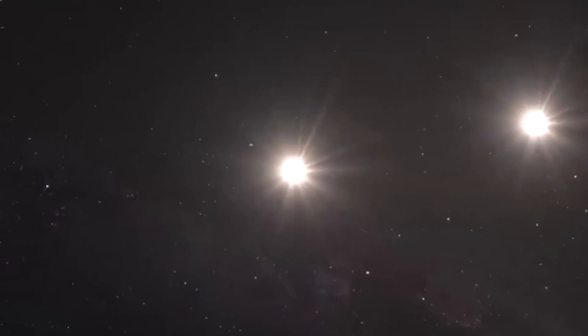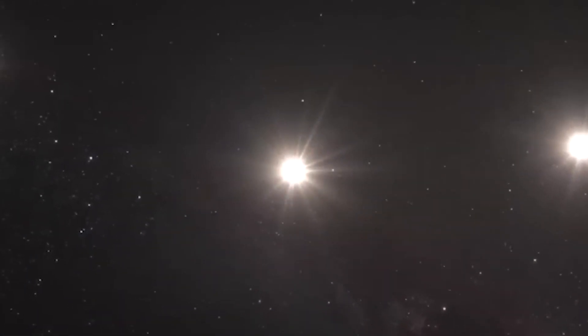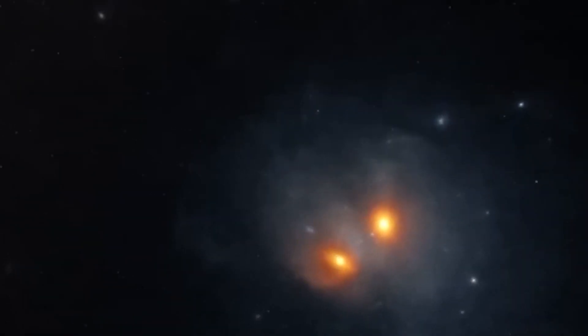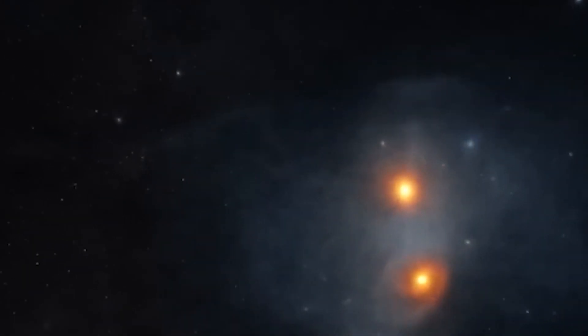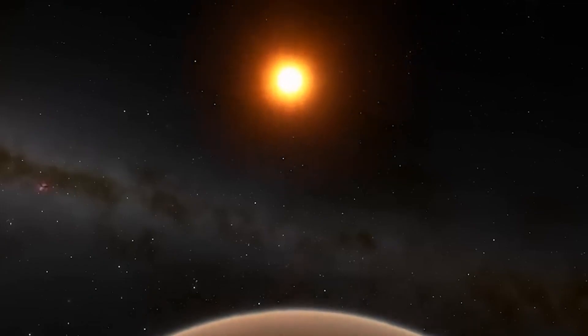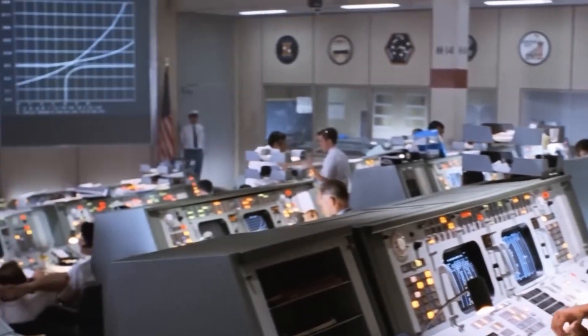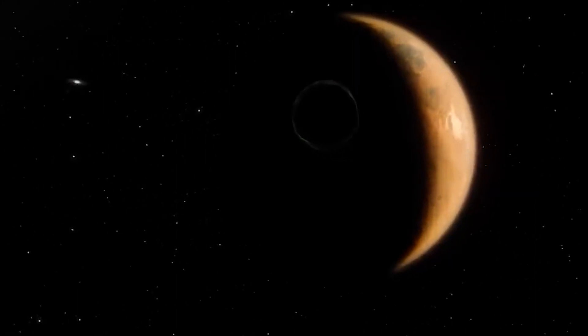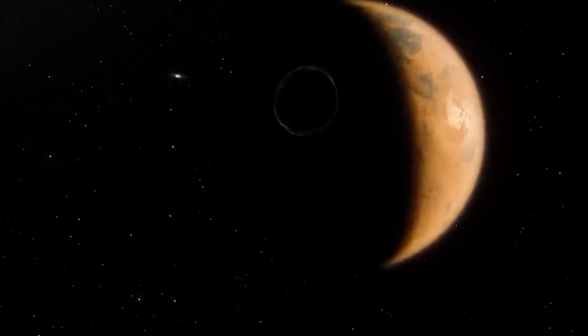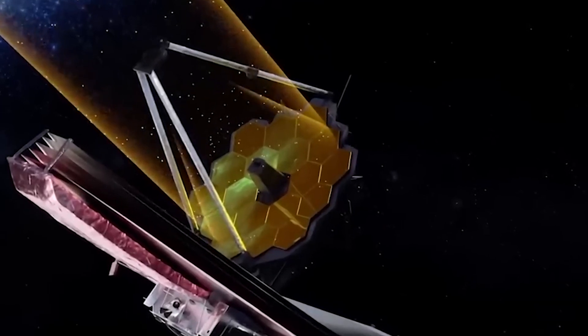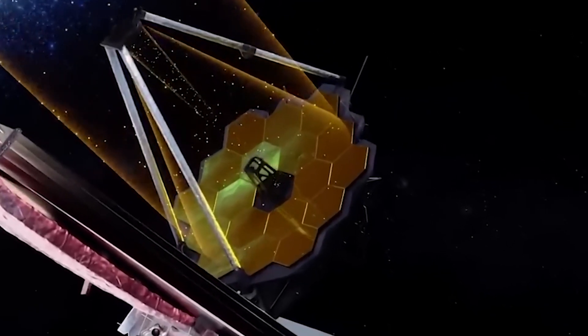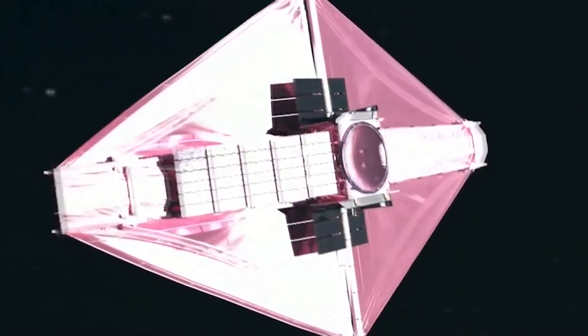Since the first discovery of an exoplanet in 1995, astronomers have identified thousands of worlds beyond our solar system. Some of these exoplanets are similar in size, composition, and distance from their star to Earth, raising the tantalizing prospect of finding life beyond our planet. While no definitive evidence of extraterrestrial life has been found yet, the search for habitable exoplanets and signs of life continues to advance at a rapid pace, fueled by new technologies, missions, and theories.